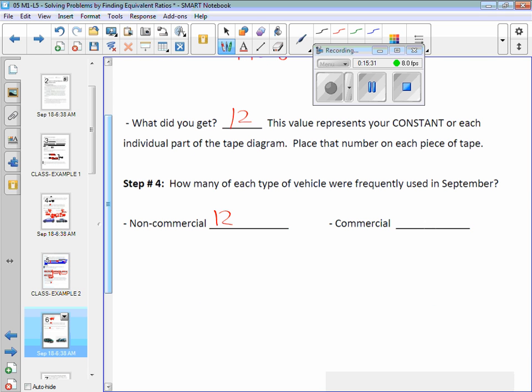Why can't we just do 12 times 5 for non-commercial vehicles and just add 108? You could. It's an alternative way of doing it and I would be fine with that. But following the pattern of what we have been doing, it's always been constant times the amount of boxes in our tape diagram. So I'm just kind of following that model.